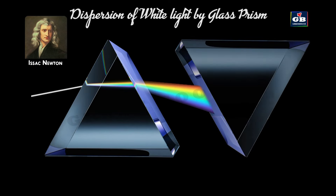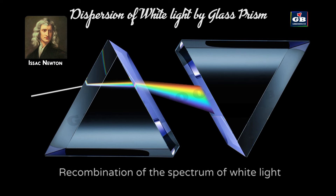Newton placed a second identical prism in an inverted position with respect to the first and allowed the spectrum to pass through it. He observed that a beam of white light emerged from the other side, meaning when white light is split into seven colors by a prism, passing that spectrum through another prism recombines it into white light.